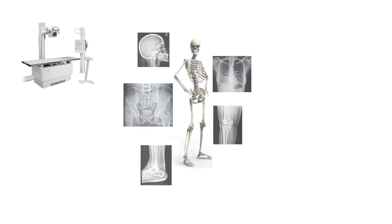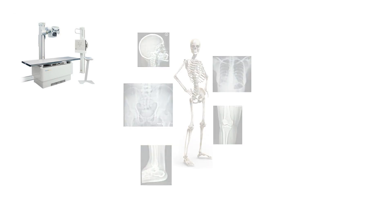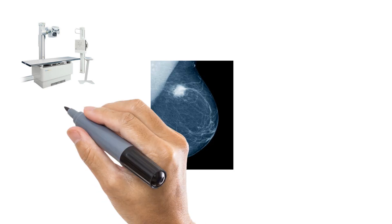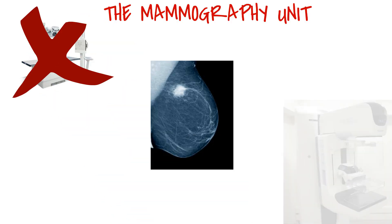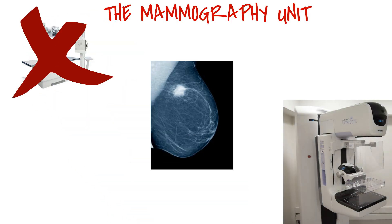Using conventional radiography equipment, X-ray images of most of the skeletal system can be acquired. However, when there is need to demonstrate the breast tissue, a conventional unit is completely unsuitable. In this case, a special unit called a mammography unit is needed.